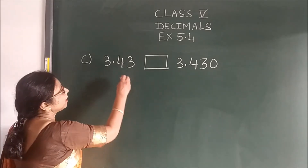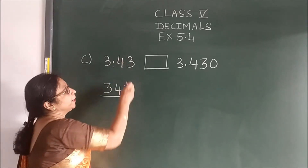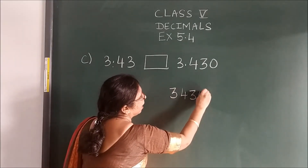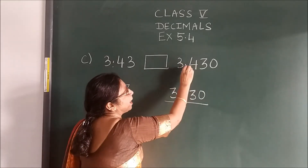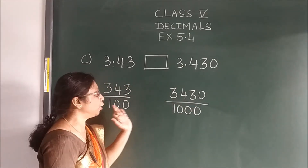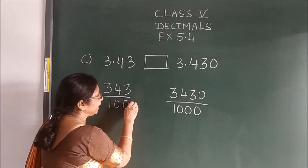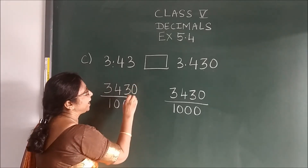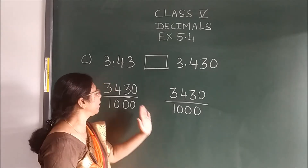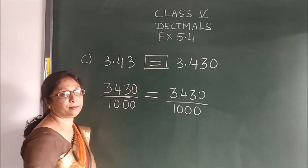We will see some more. In this, again the same steps you are going to follow. You will write the number as it is. After point how many numbers are there? 2. So you will place here 2 zeros. Then the up number, count the number after the point: 1, 2, 3. So you will place here 3 zeros. Now you can see in the denominator, both are different — they are unlike decimals. So you add here 1 zero and same number of zeros you will add up. Now the denominators are same. Once denominators become same, you see the numerator number. Numerator is same, so you are going to put equal to.